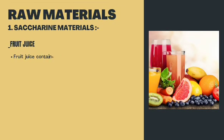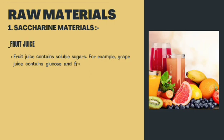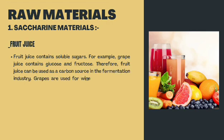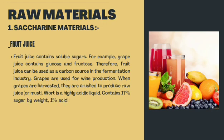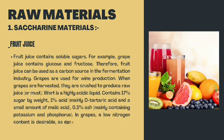Fruit juice contains soluble sugars; for example, grape juice contains glucose and fructose. Therefore, fruit juice can be used as a carbon source in the fermentation industry. Grapes are used for wine production. When grapes are harvested, they are crushed to produce raw juice, which is a highly acidic juice. It contains 17% sugar by weight and 1% acid, mainly tartaric acid and a small amount of malic acid, and 0.3% ash mainly containing potassium and phosphorus. In grapes, a low nitrogen content is desirable as excessive nitrogen can lead to undesirable fermentation.